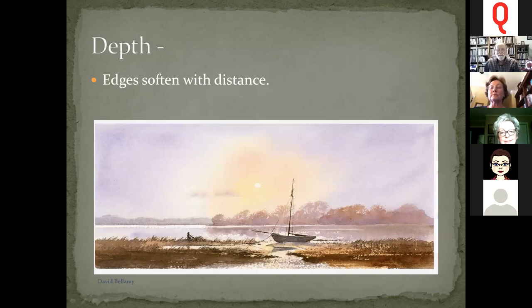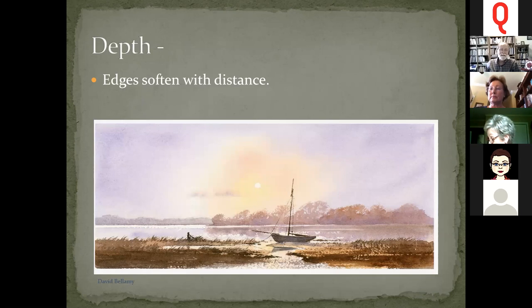Edges soften with distance. On a hazy summer morning, you lose detail quickly and get soft edges due to haze and moisture. When painting distant hills or trees, you don't want a hard line — go really soft, use a tonal approach rather than linear, or use a very broken and light line.